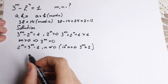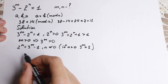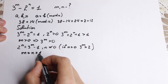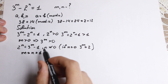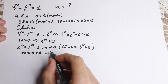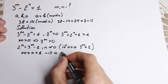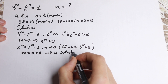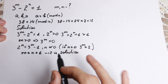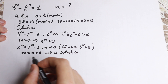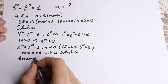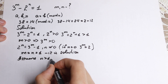The second step: we note that m equal to 1 and n equal to 1 is a solution, because 3 minus 2 equals 1. This is a solution. Now let's assume that n is greater than 1.